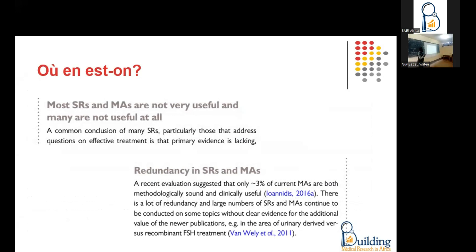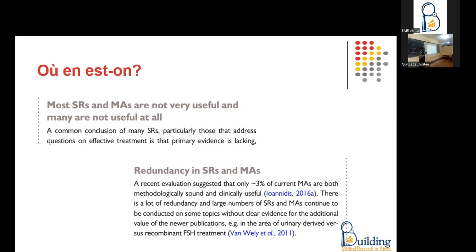Even for systematic reviews — what we call the review system, which is considered an element often used to make health decisions — a study showed that only 3% of systematic reviews have methodological and clinical interest or are well done. That means most systematic reviews are not pertinent methodologically or clinically. For example, if we want to know the determinants of child health in Africa, we compile studies from Senegal, Egypt, Cameroon, and so on into a systematic review.